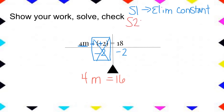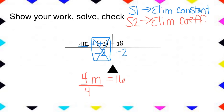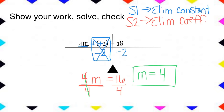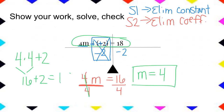Step two: eliminate the coefficient — that's this four that's multiplied by my M. The opposite of multiplying by four is dividing by four, and I need to make sure I do the same thing on both sides. Four divided by four gives me one M. Sixteen divided by four is four — I think that's my answer. Let's check: original equation was four times M plus two. That's sixteen plus two, which is indeed 18. I've got the right answer.